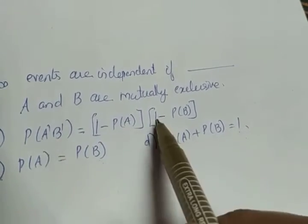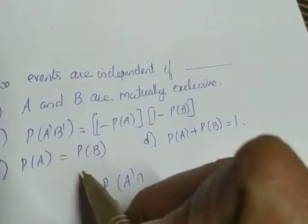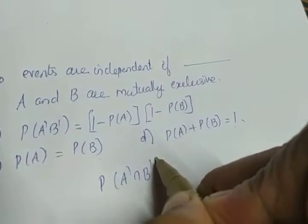And we have a confusion with this one. So we are going to take the left side. P of A dash intersection—sorry. A dash B dash means it is actually A dash intersection B dash.